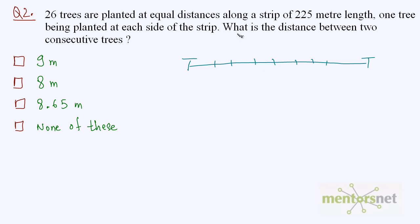You have been asked the distance between consecutive trees. To find that distance, you first need to calculate how many parts the strip is getting divided into because of the trees. Once you get those parts, you can calculate the length of each part, which is ultimately the distance between the two trees.